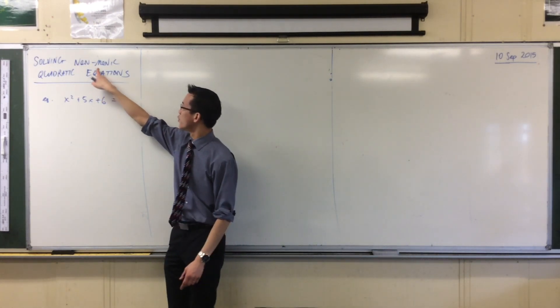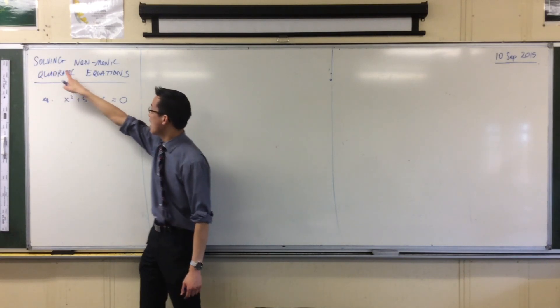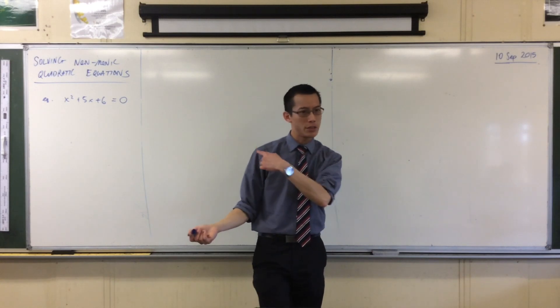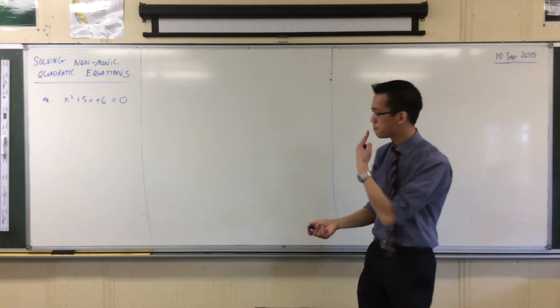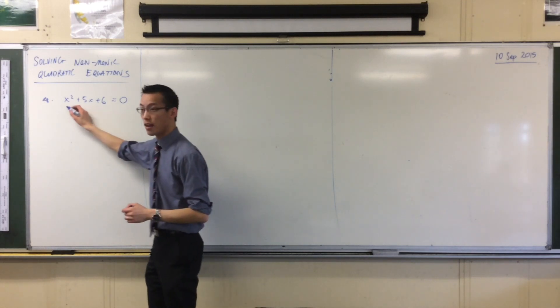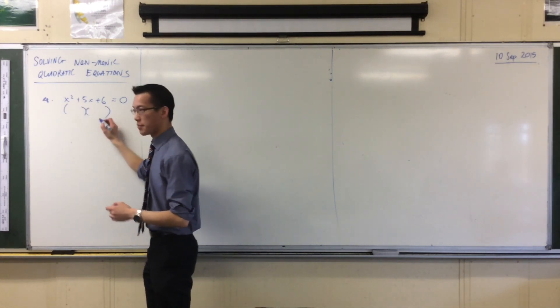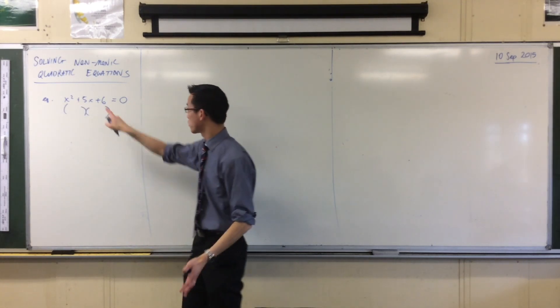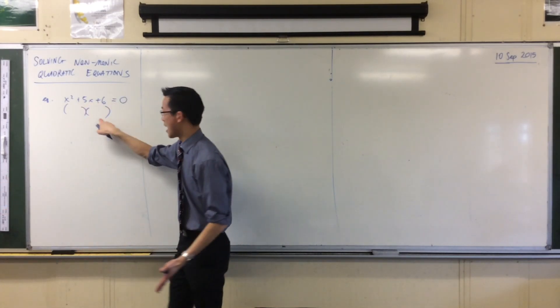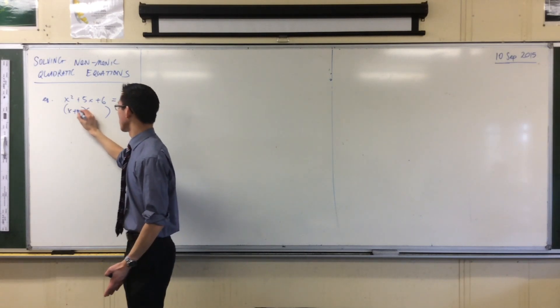Now when you go to these words up here, solving means tell me what values would make this true. How would we do this one by the way? You need to see a pair of numbers, a pair of numbers that will multiply to six and add to five, and the reason why I'm doing that is because I want to factorize.